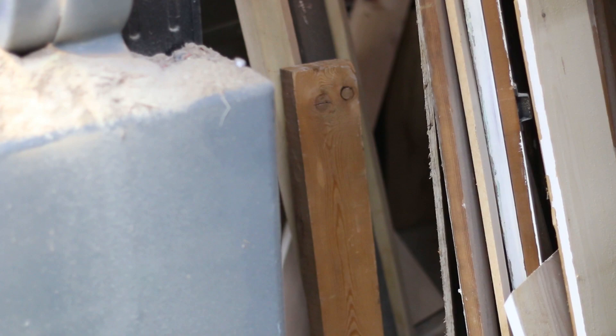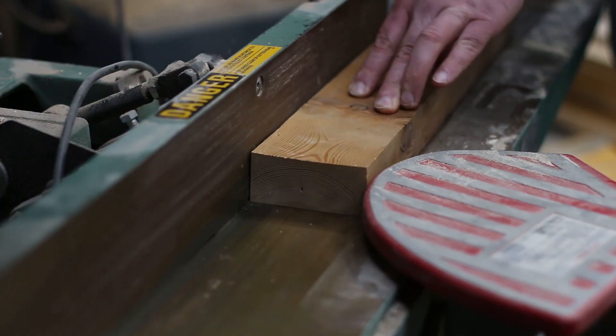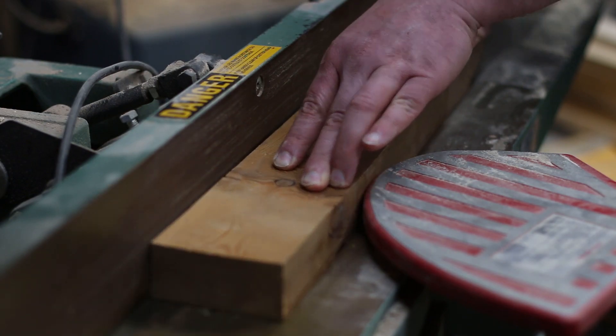The first step was to find an old 2x4 and get it square on all four sides. I used the core three tools of the wood shop to achieve this: the jointer, planer, and table saw.